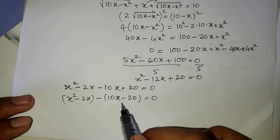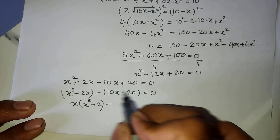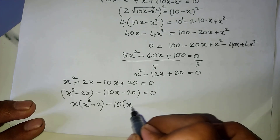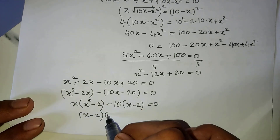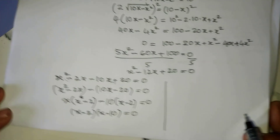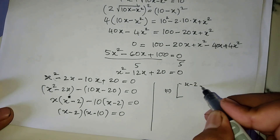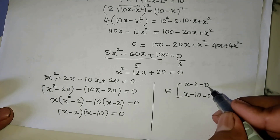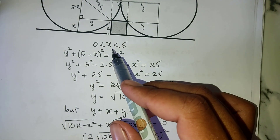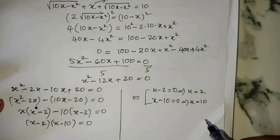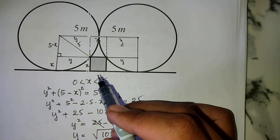Factoring: we group terms and factor out (a minus 2) and (a minus 10), giving (a minus 2)(a minus 10) equals 0. So a equals 2 or a equals 10. Since we know that a must be smaller than 5, we reject a equals 10, and take a equals 2.